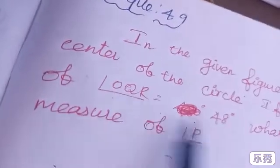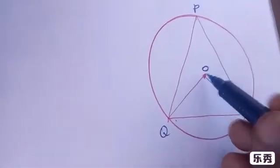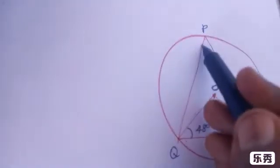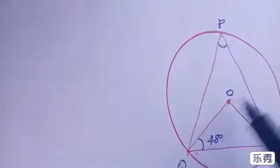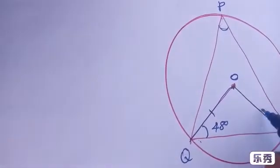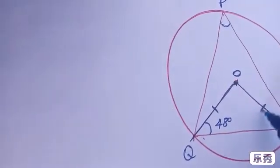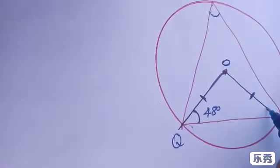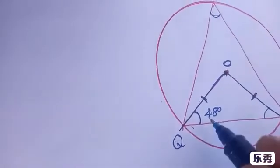From the picture, angle OQR is equal to 48 degrees. Angle P is related to this angle. First, consider the triangle — O is the center of the circle, so OQ and OR are radii of the circle.